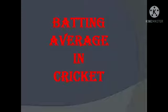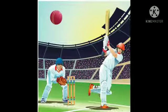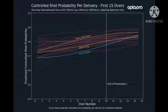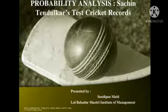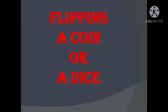Batting average in cricket. Batting average in cricket represents how many runs a batsman would score before getting out. For example, if a batsman had scored 40 runs out of 100 from boundaries in the previous match, then there is a chance that he would score 40% of his runs in the next match from boundaries.